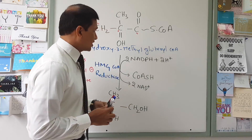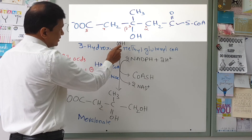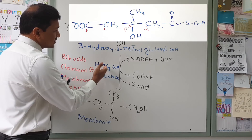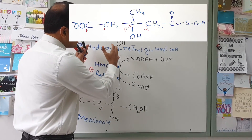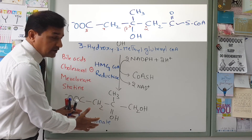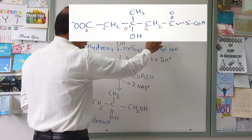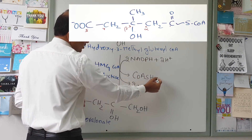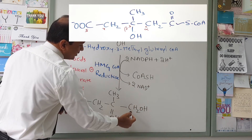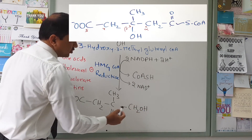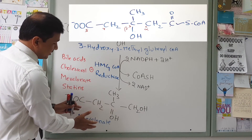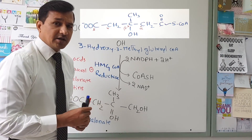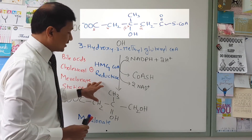The HMG-CoA structure is shown here. 3-hydroxy-3-methylglutaryl-CoA is simply written as HMG-CoA. This HMG-CoA is converted into mevalonate because the CoA part is taken out. The C double bond and S-CoA — that CoA part is released as CoA-SH, and the carbon now has a hydroxyl group (CH2OH). That resulting molecule is called mevalonate.